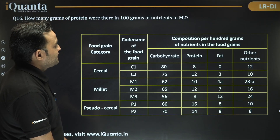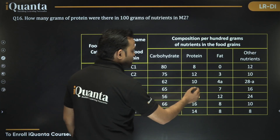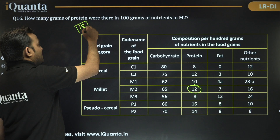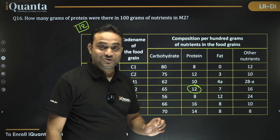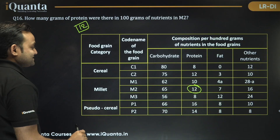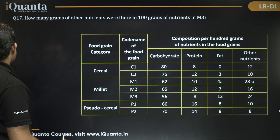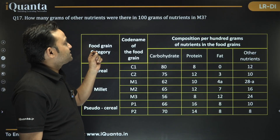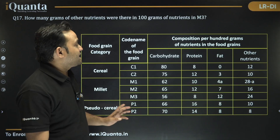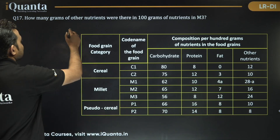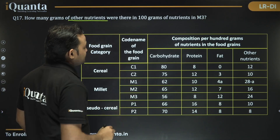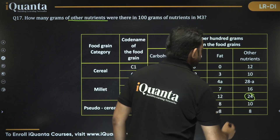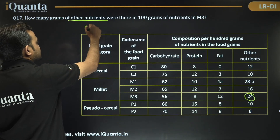Question 2: How many grams of protein were in 100 grams of nutrients in M2? From the table, M2 protein = 12 grams. Question 3: How many grams of other nutrients were in 100 grams of M3? M3 other nutrients = 24 grams.